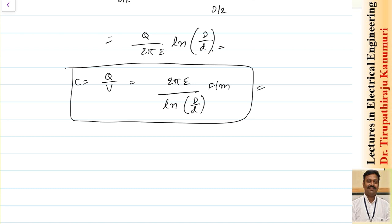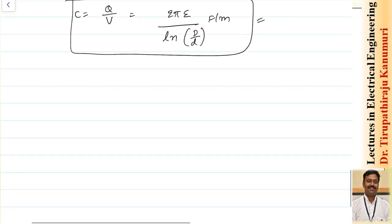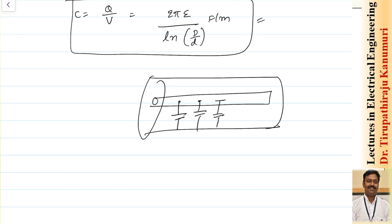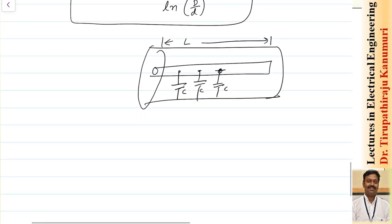Capacitance is formed everywhere along the cable, and these are equivalent to multiple capacitors connected in parallel. The capacitance per unit length is 2πε/ln(D/d) F/m. To get total capacitance, multiply this capacitance per meter by the length of the cable in meters.